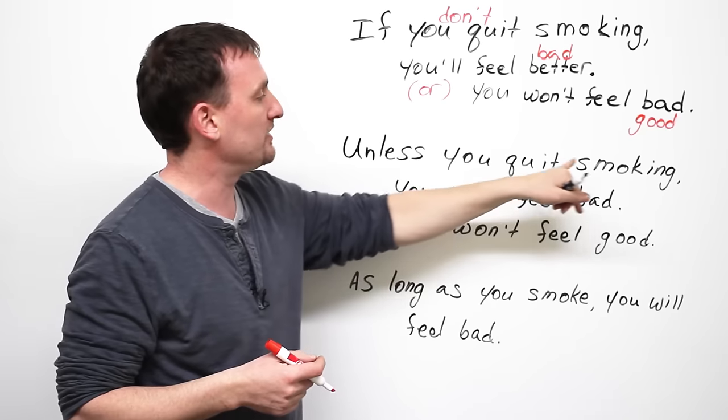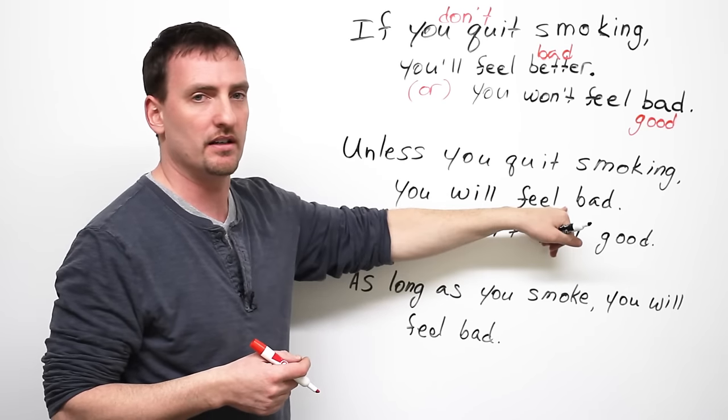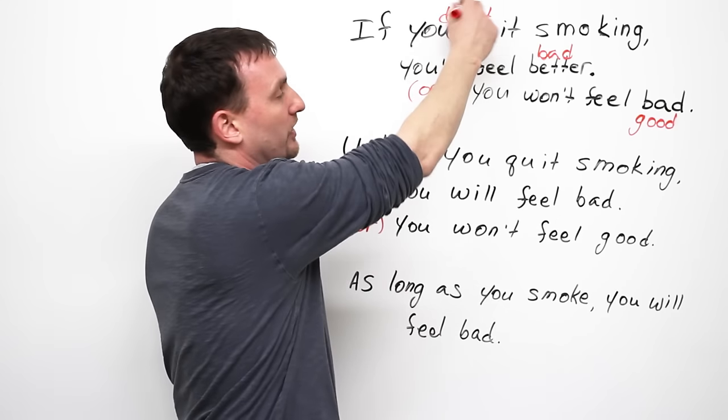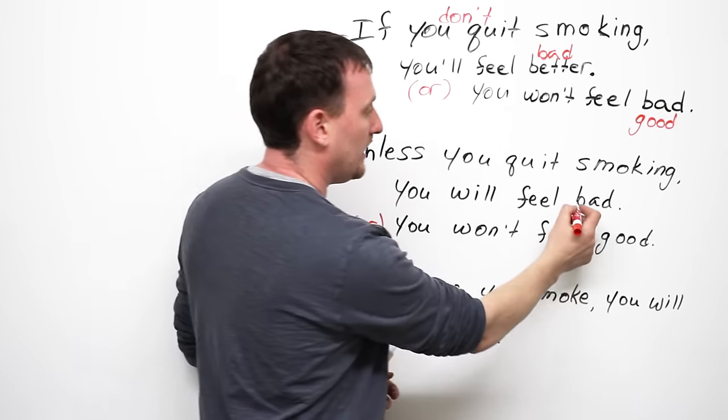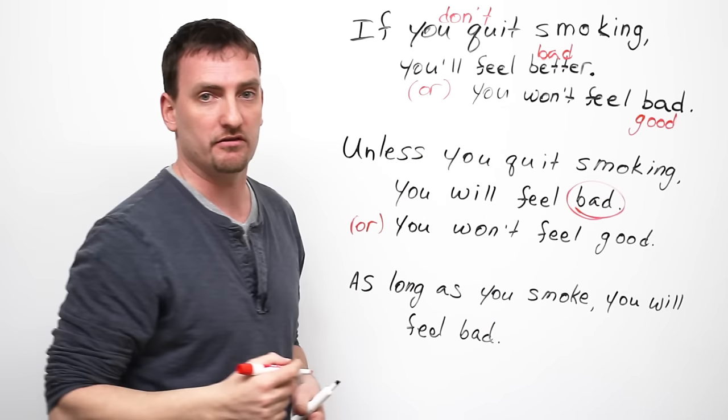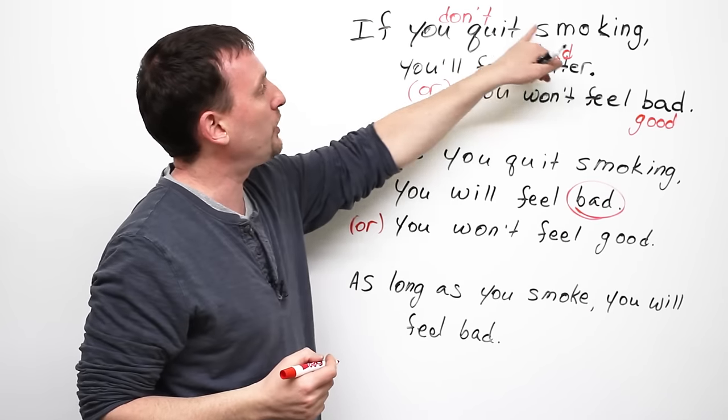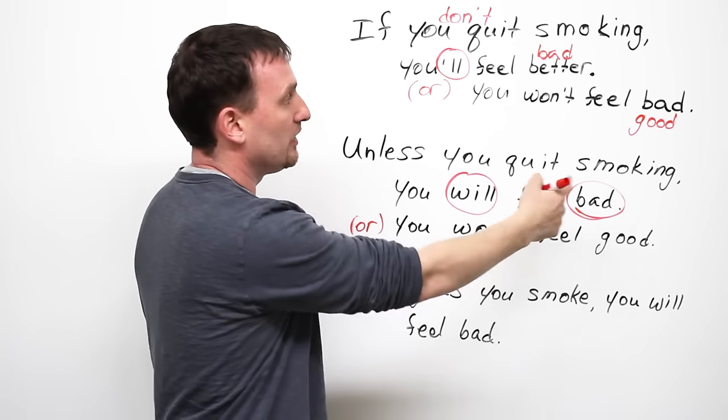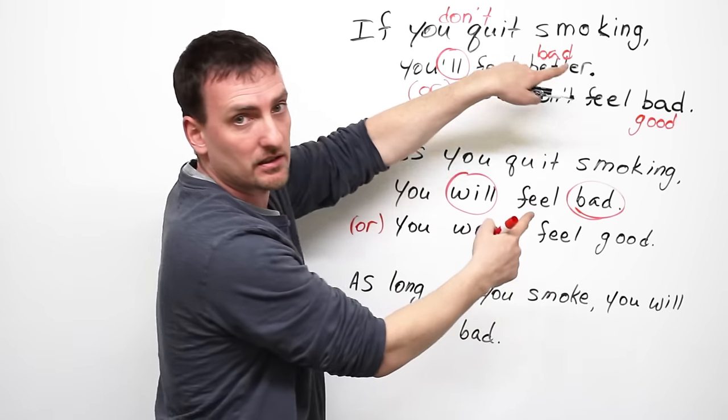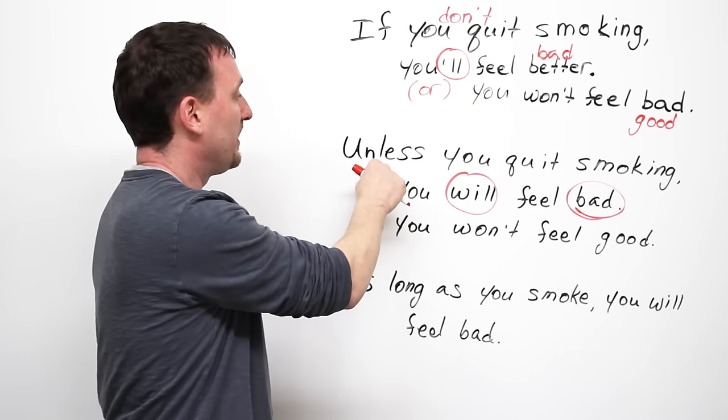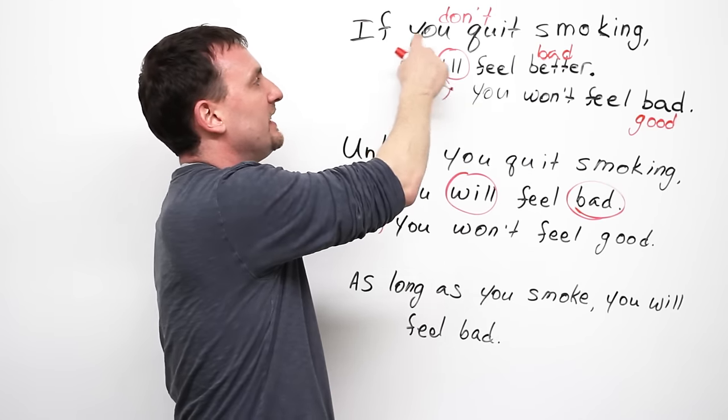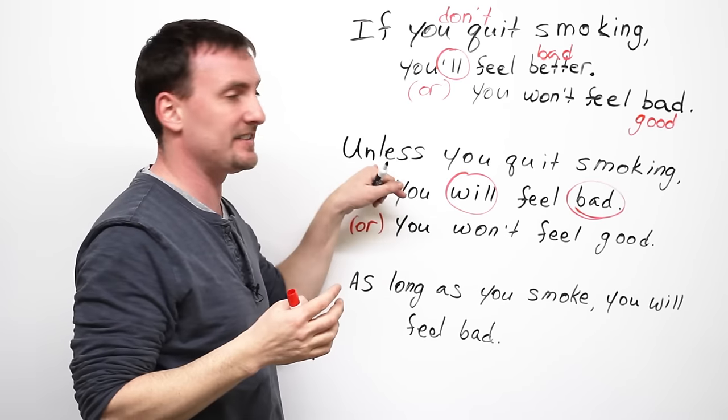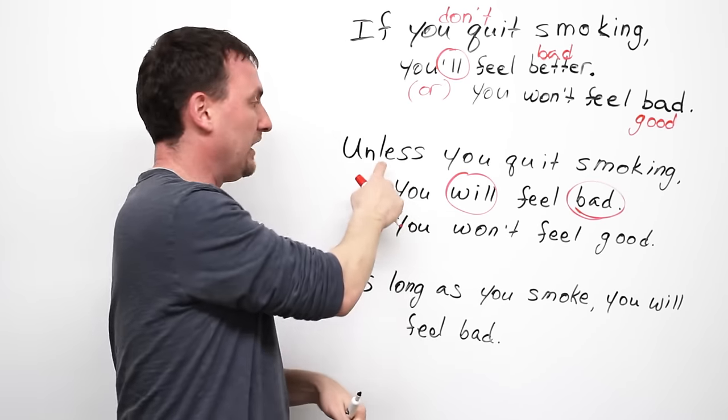Let's look at this sentence. Unless you quit smoking, you will feel bad. Now, what's the difference between this sentence and this sentence with a don't? Nothing. It's the exact same. If you don't quit smoking, you will feel bad. Bad and bad. Do you understand what I'm saying? The unless is the same as if you don't. This is what we have to remember here.